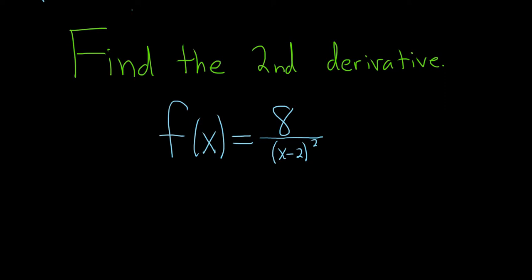Find the second derivative. Let's go ahead and try to work this out. To find the second derivative, we have to find the derivative and then find the derivative again. We have a quotient or a fraction, so the quotient rule does come to mind.